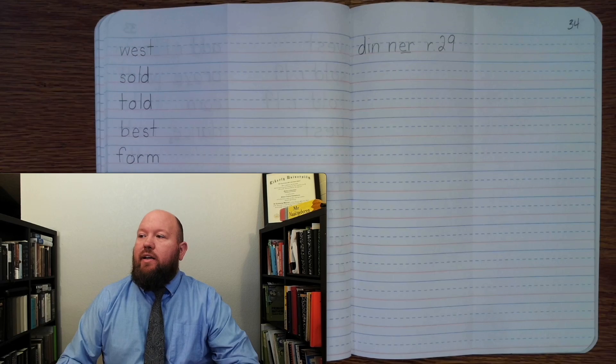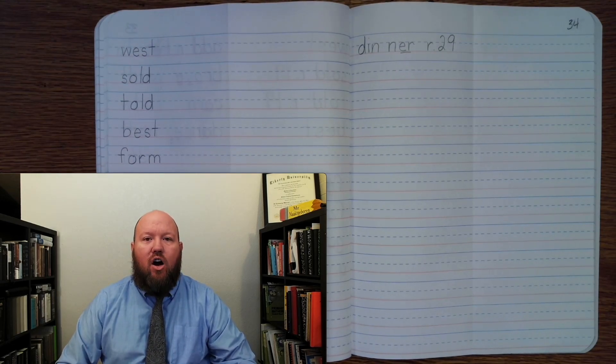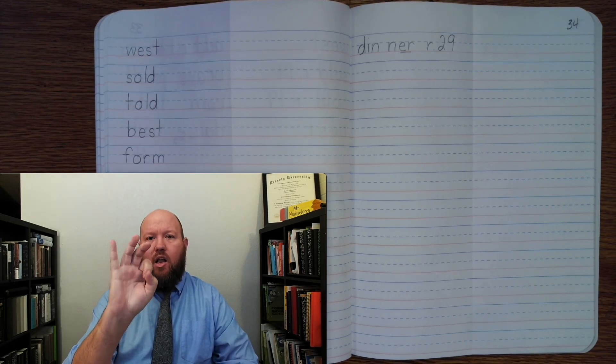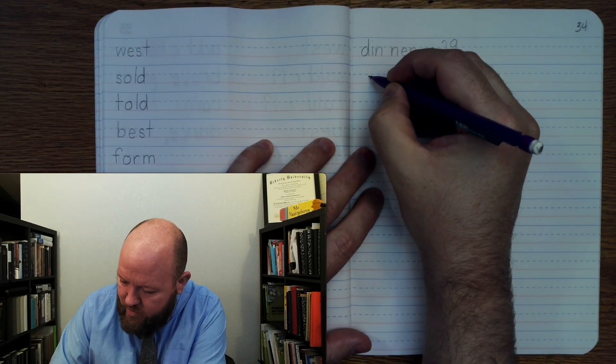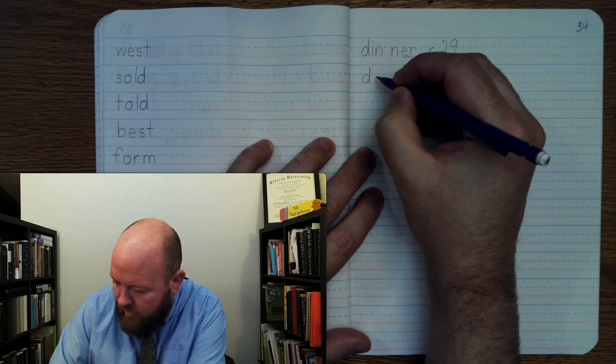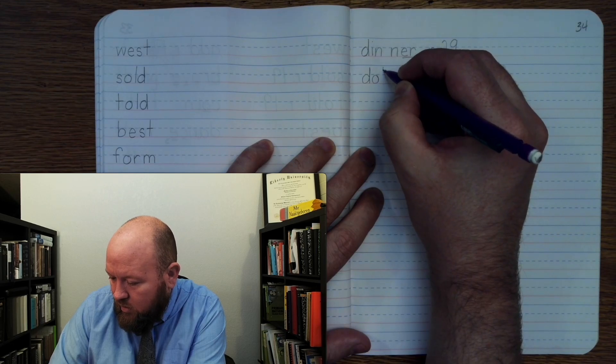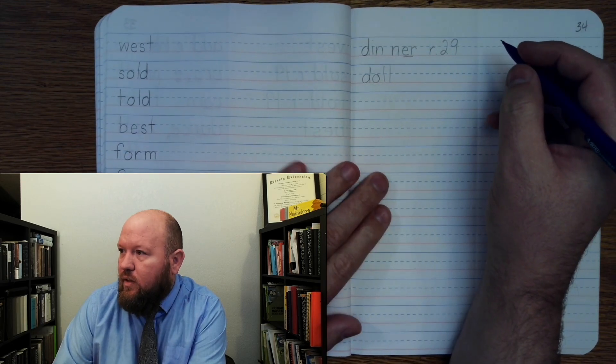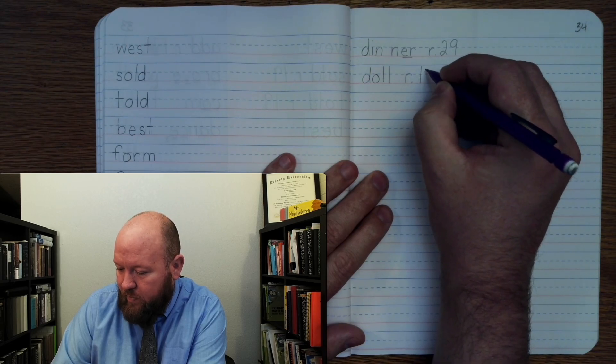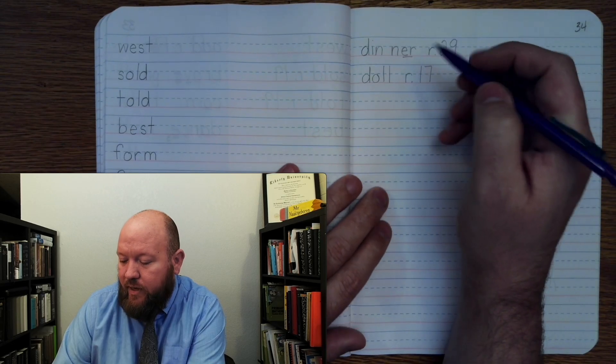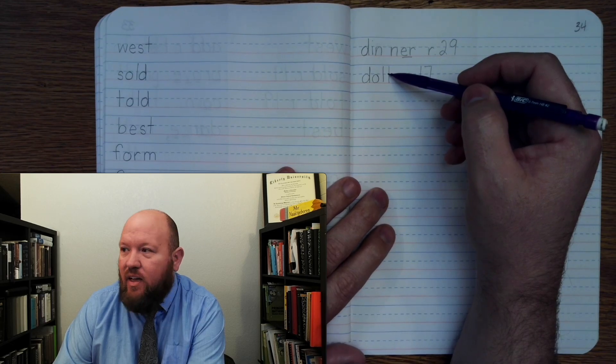The next word is doll. Like the girl is playing with her doll. Doll. Base word doll. D, O, L, L. Doll. Okay, write doll. D, O, L, L. Markings. D, O, L, L. Rule 17. English words that end in L will oftentimes double.